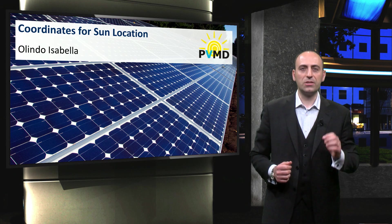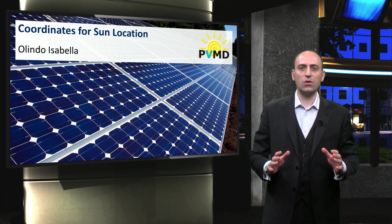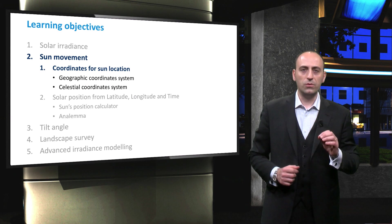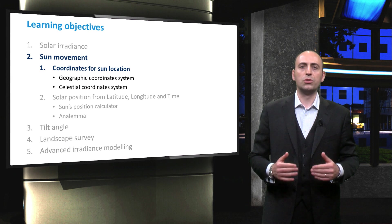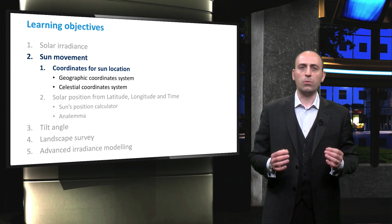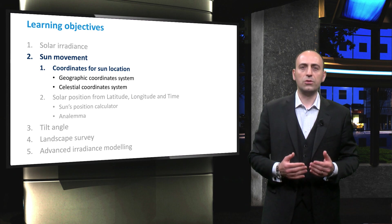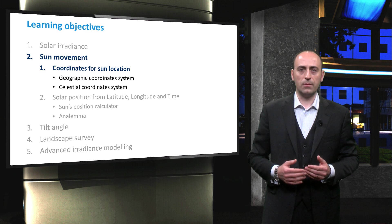When planning a PV system, it is crucial to know at any given time the position of the Sun in the sky as seen from the location of the solar system. In today's lecture, we will introduce two coordinate systems that we will use to locate the Sun in the sky: first, the geographic and then the celestial coordinate systems.